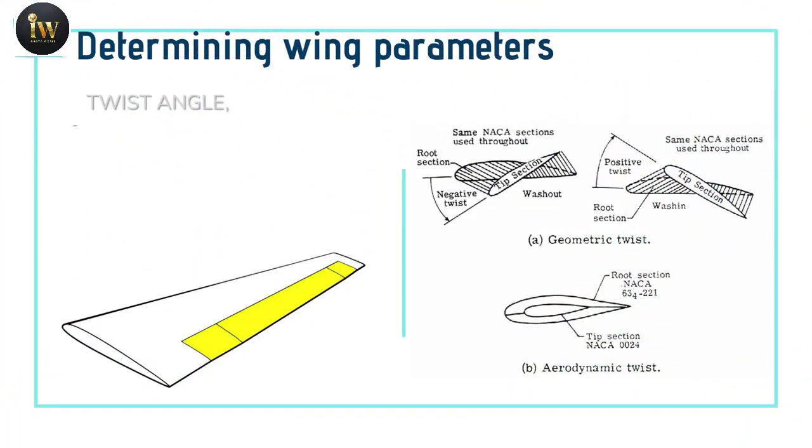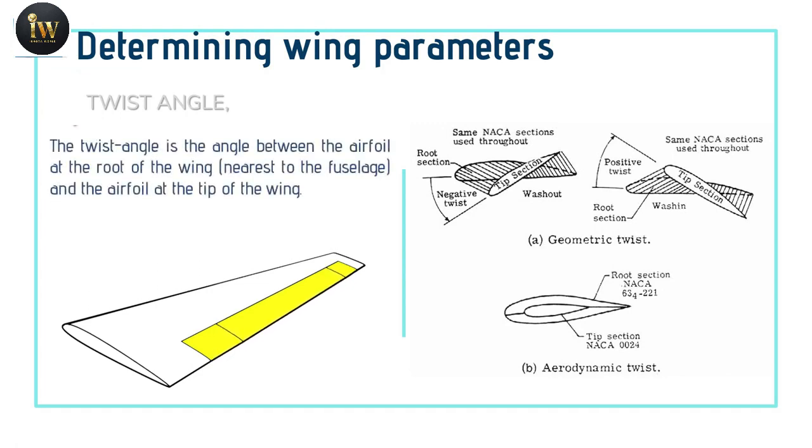Next comes twist angle. According to Raymer, wing twist typically ranges between 0 to minus 5 degrees. This number applies to conventional wings which are swept aft. Here the twist is used to avoid the tip stall which is a characteristic of untwisted and aft swept wings.